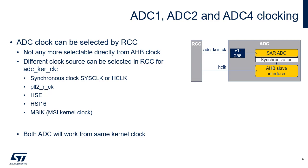Using the same kernel clock source synchronizes ADC1-ADC2 and ADC4 activity and helps manage interference between them. Compared to previous generations, there is no option to select the AHB clock (HCLK) as the sampling and conversion clock source. However, it is still possible to choose the kernel clock from SysCLK or HCLK in the RCC.